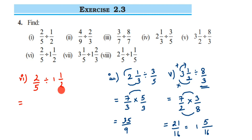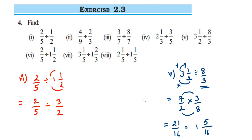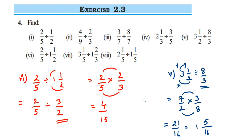We have 2 by 5; division remains the same for now. Convert the mixed fraction: 2 ones are 2, 2 plus 1 is 3, giving 3 by 2. Now: 2 by 5, division becomes multiplication, take the reciprocal of 3 by 2 which is 2 by 3. We cannot cancel, so multiply: 2 twos are 4, upon 5 threes which is 15. The answer is 4 by 15.